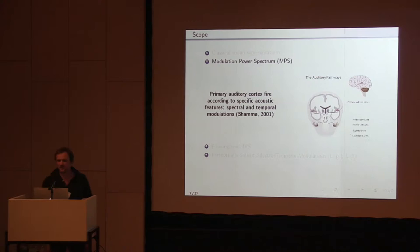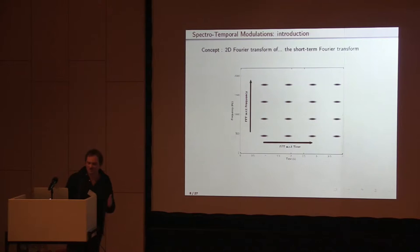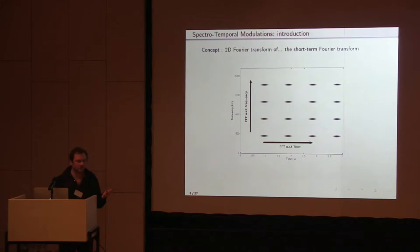As presented previously by Mumia, it has been shown that the primary auditory cortex fires according to specific acoustic features, namely spectral and temporal modulation. I will try to re-explain the modulation power spectrum, but differently. Globally, the concept is to do a two-dimensional Fourier transform of the short-term Fourier transform, as Taffeta also used. Here we use the linear frequency scale.